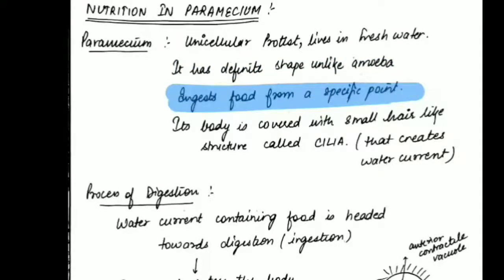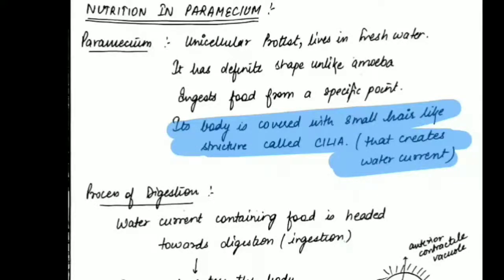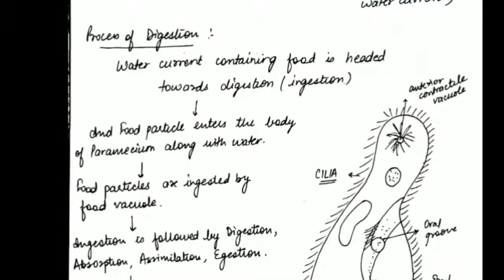The body of paramecium is covered with small hair-like structures called cilia, which create water currents and help in its movement. It also lives in fresh water and moves using the cilia present on its body surface. Since it has a definite shape, it does not have pseudopodia. The cilia help in locomotion, while digestion occurs from a specific point on the body.